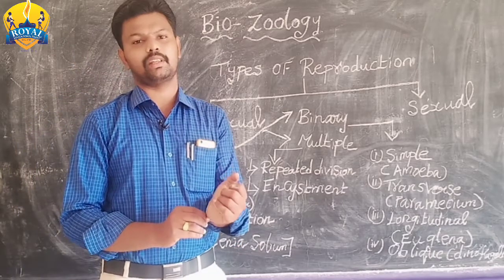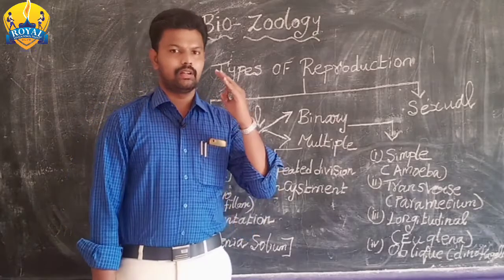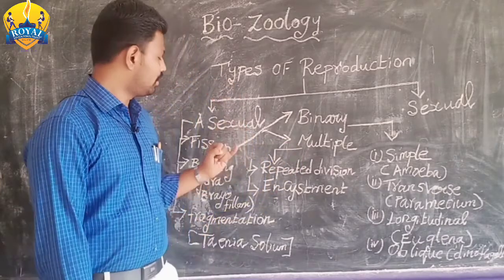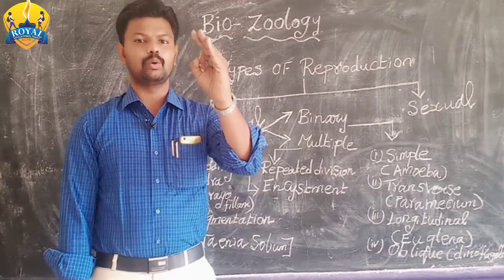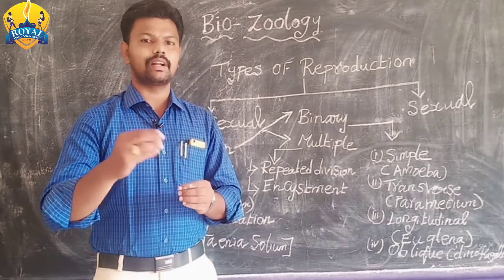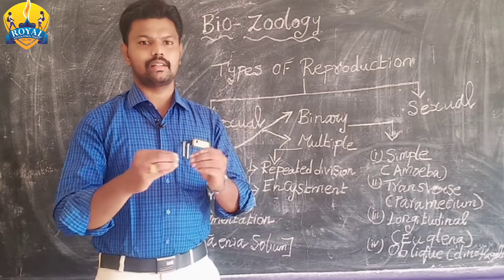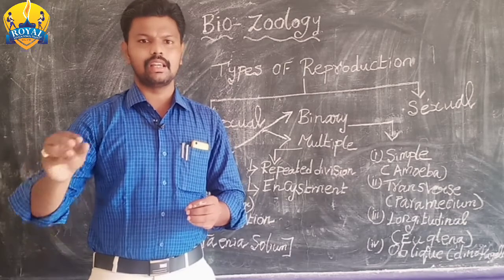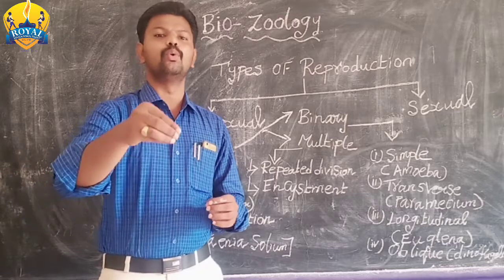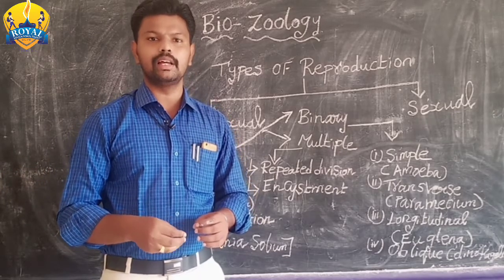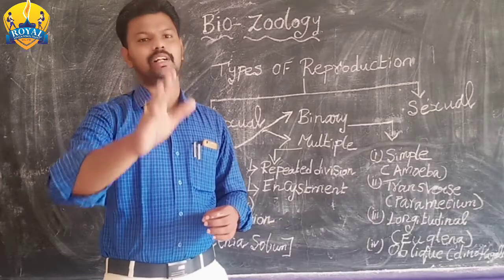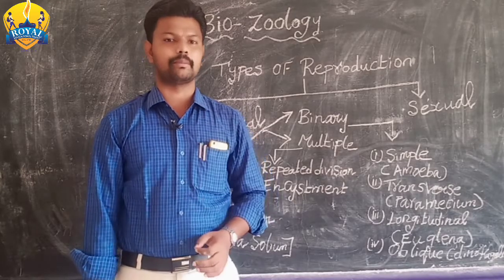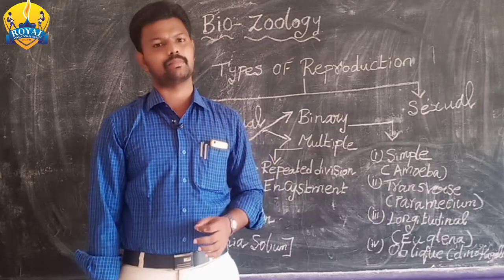The third type is fragmentation. Fragment means pieces — a single organism divides into several pieces, and each piece grows into a new individual. That is called fragmentation. Example: Taenia solium.